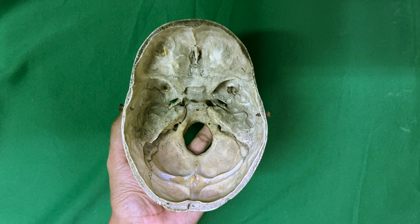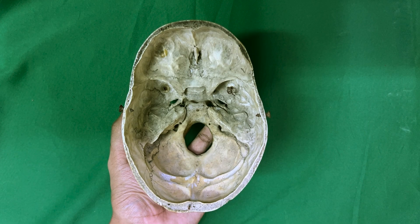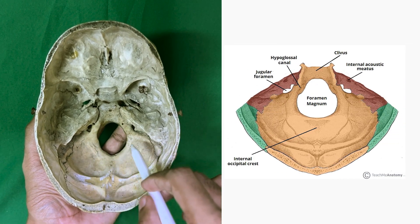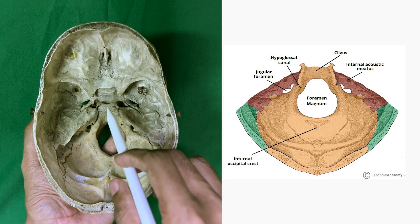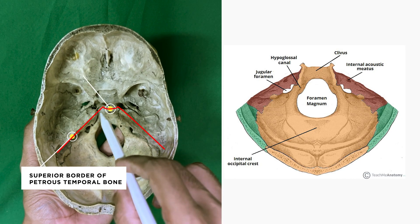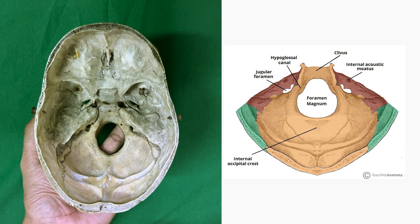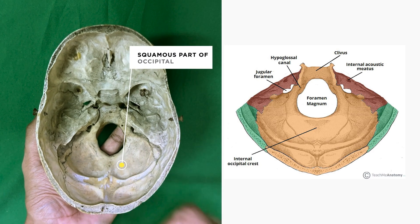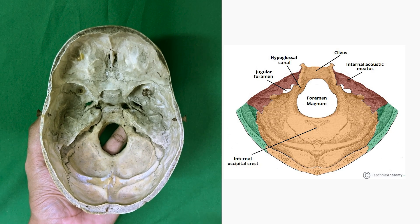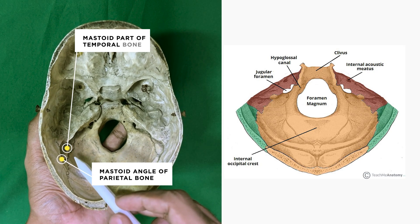Finally, let's have a look at the posterior cranial fossa. This is the largest and the deepest of the three cranial fossae. It is bounded anteriorly by the superior border of the petrous temporal bone and the dorsum sellae of the sphenoid bone. Posteriorly, it is bounded by the squamous part of the occipital bone. And on each side, it is bounded by the mastoid part of the temporal bone and the mastoid angle of the parietal bone.